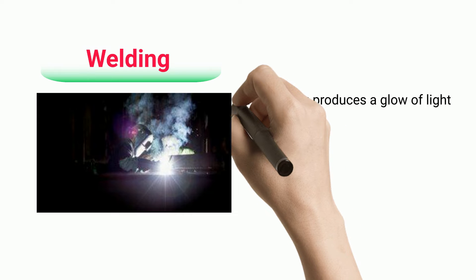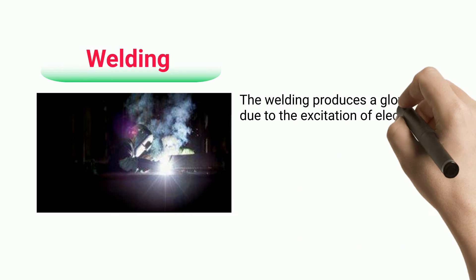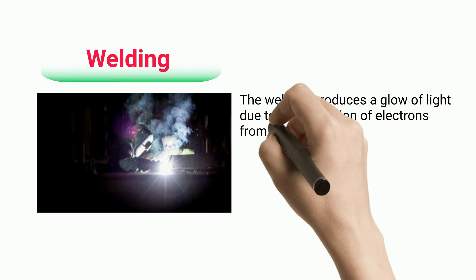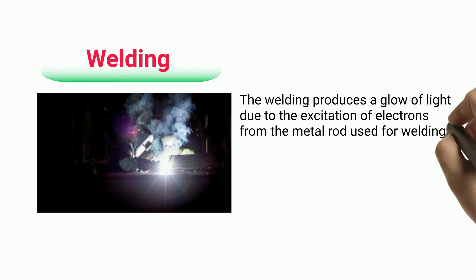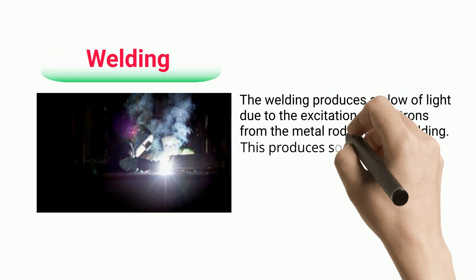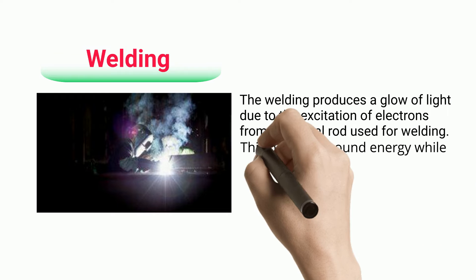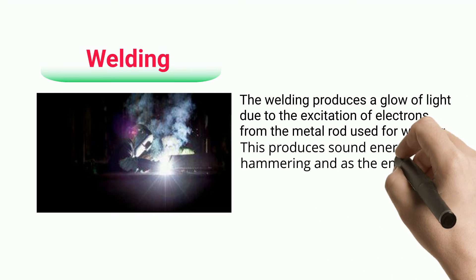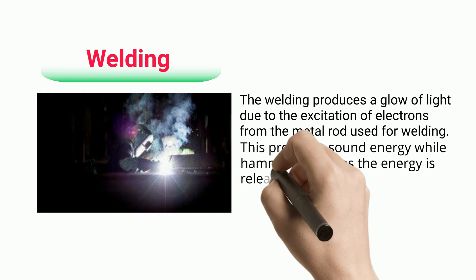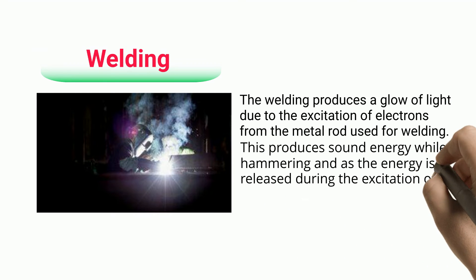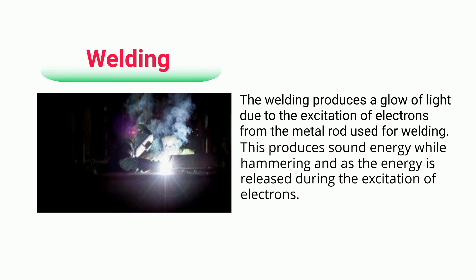Welding: The welding process produces a glow of light due to the excitation of electrons from the metal rod used for welding. This produces sound energy while hammering, and energy is released during the excitation of electrons.